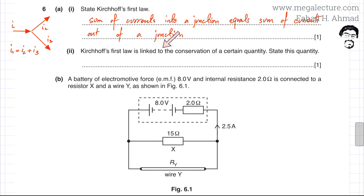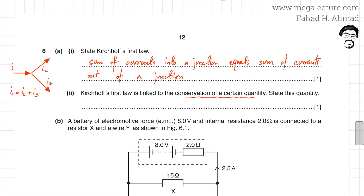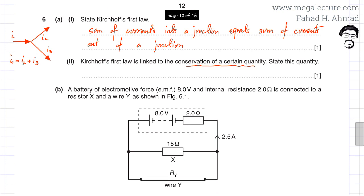The question states that Kirchhoff's first law is linked to the conservation of a certain quantity — that quantity is charge. The amount of charge flowing into a node and the amount leaving must be equal. Current is the rate of flow of charge, so it is the conservation of charge that we are talking about when we discuss Kirchhoff's first law.